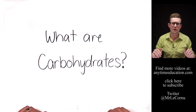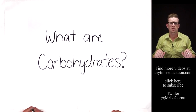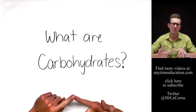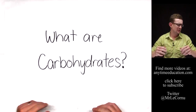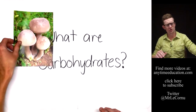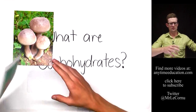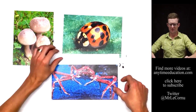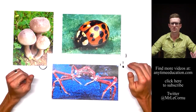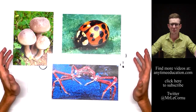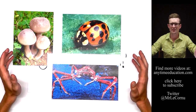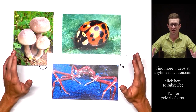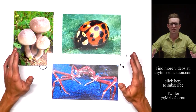So what are carbohydrates? When you think about carbohydrates you probably think about things like bread and pasta. Do you ever think about mushrooms, or ladybirds? What about Japanese spider crabs? I sometimes think about these when I think of carbohydrates. In this video I'll explain why, and lots of other info.